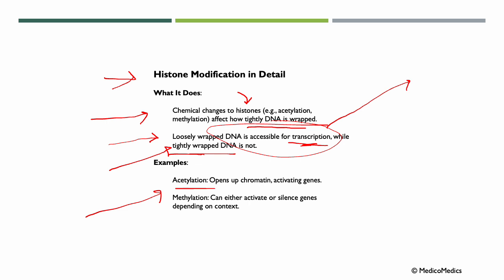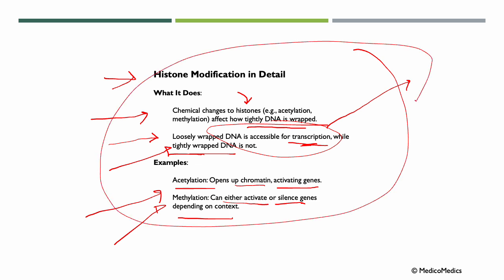Examples of acetylation is it opens up chromatin activating genes. And methylation can either activate or silence genes depending on context. Histone modification is like loosening or tightening a belt. Loosening it makes it easier to use the DNA.